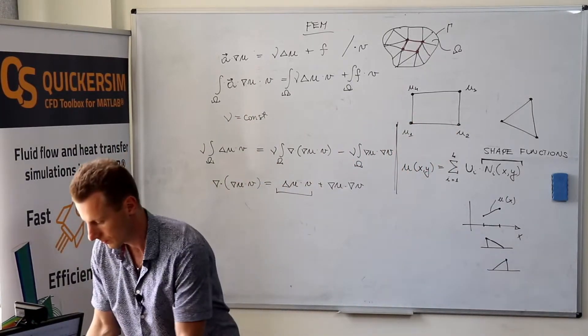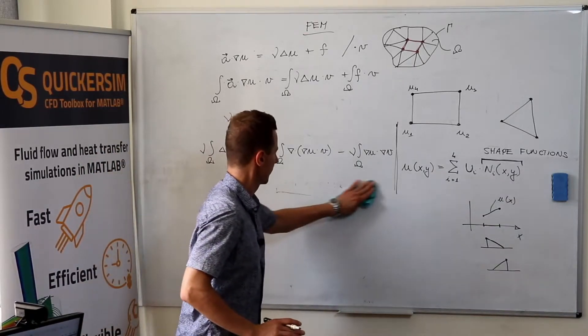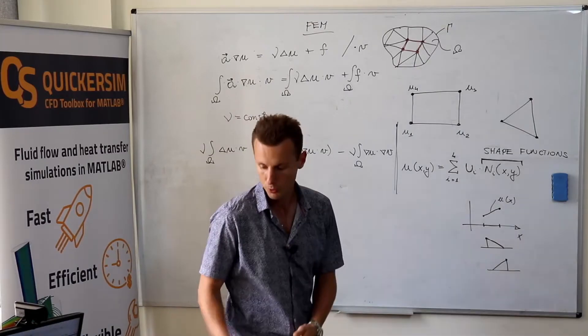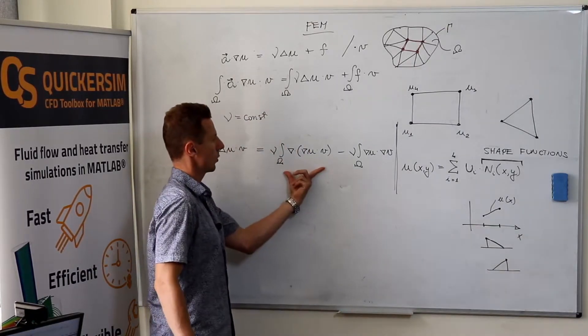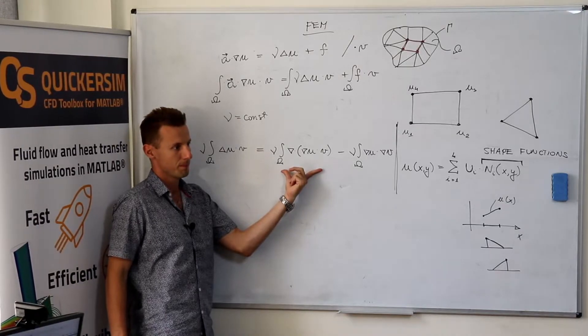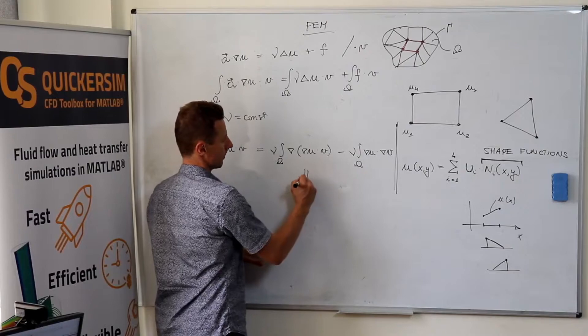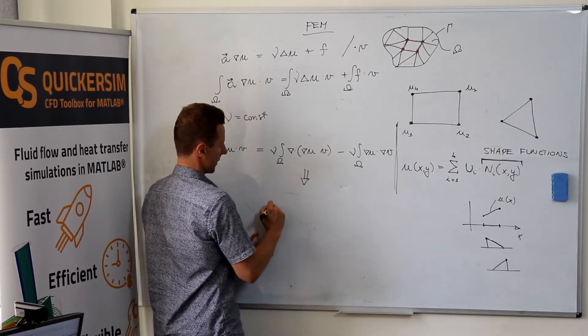So far, so good. Now, small change. How can we transform that? By Gaussian theorem.